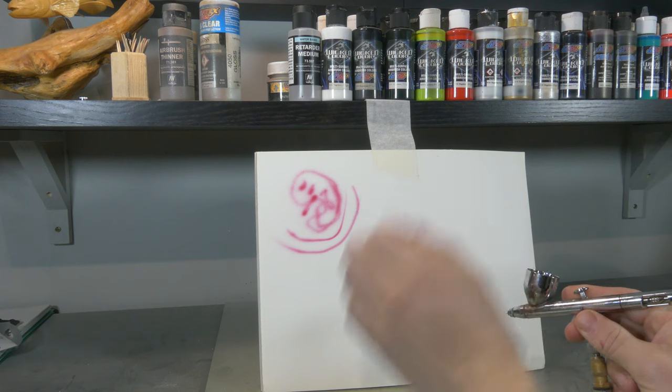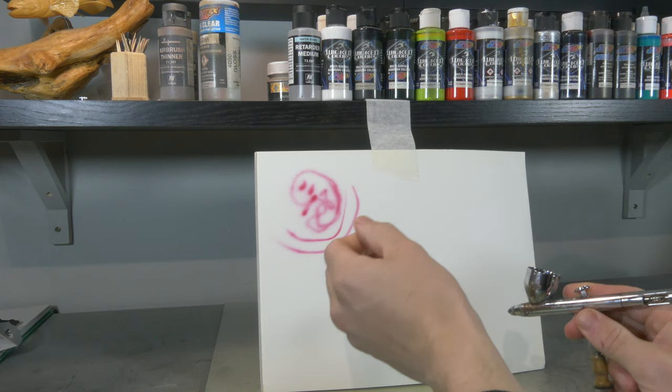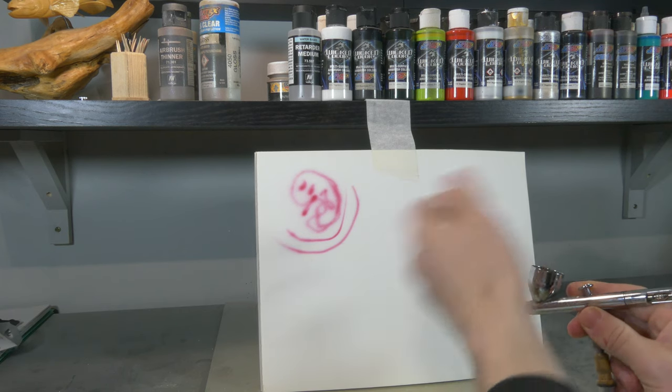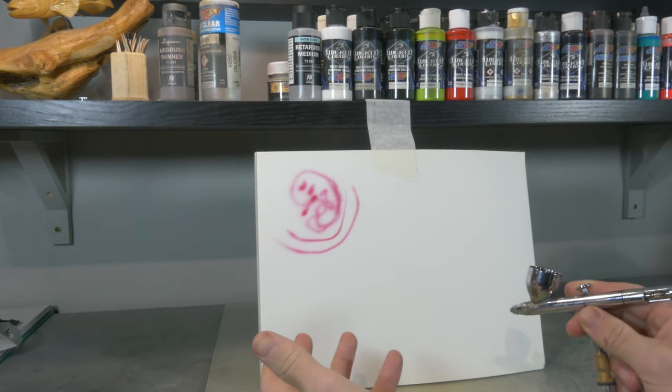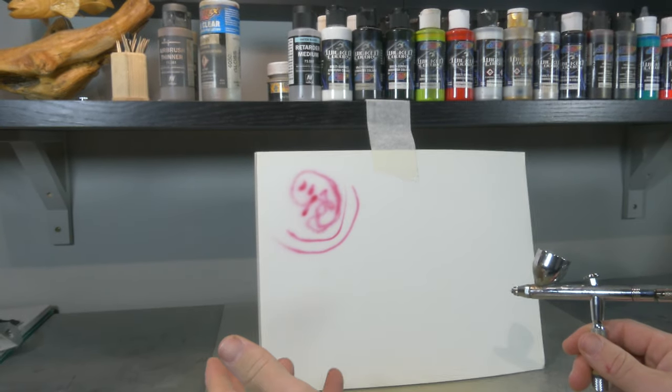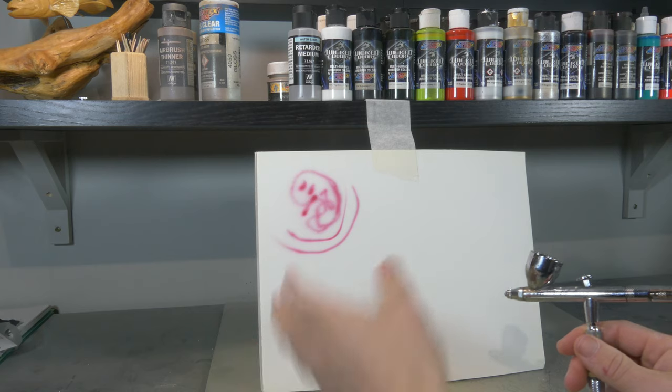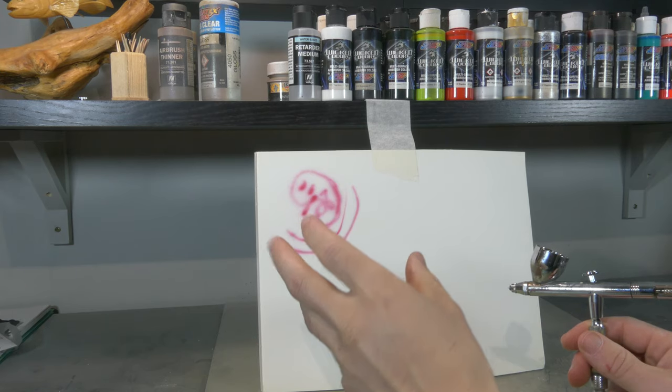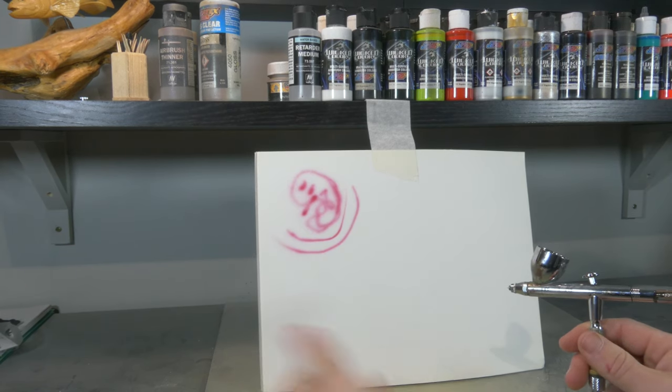Now suddenly my airbrush starts working with paint without reducer. So it's very important to use the right air pressure when you're using thicker paints. Especially for base coating I like to use thicker paints because you can build up that paint way thicker and your base coating is going to be faster.